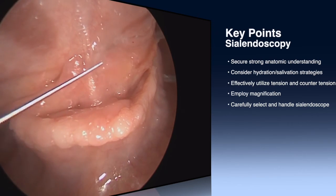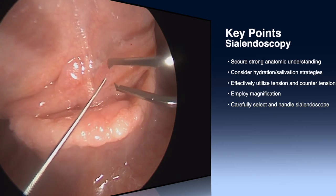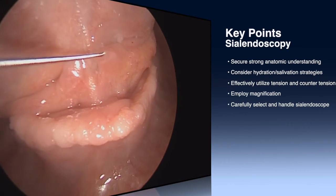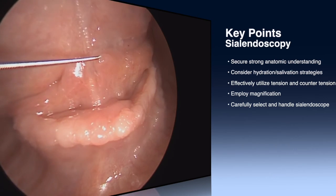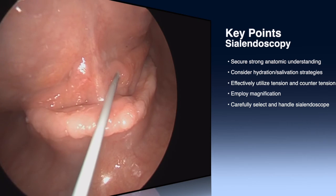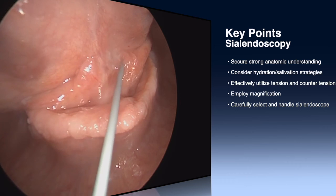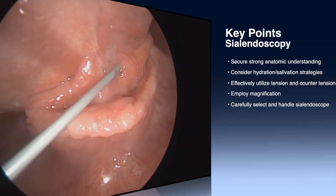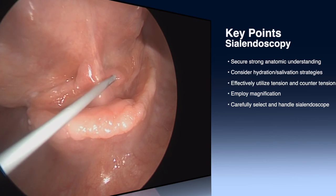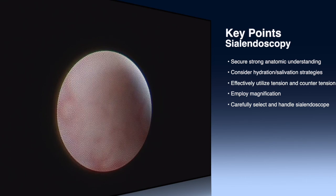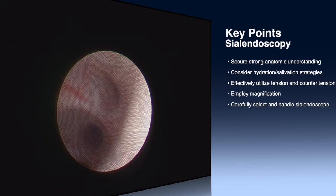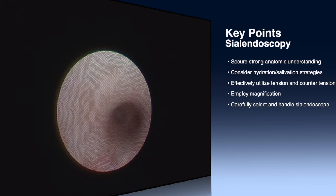In the case of the submandibular gland, the countertension can be provided with a curved tooth forceps or with countertension in the floor of mouth with the non-dominant hand. Magnification in the form of loops, exoscopes, or a microscope is essential for successful cannulation and dilation of the very small duct papilla. In general, I'd like to use a slightly larger sialendoscope — the 1.1 and 1.3 mm sialendoscopes are a good workhorse for diagnostic sialendoscopy, with the 1.6 mm sialendoscope particularly helpful for interventional sialendoscopy. The sialendoscopy equipment is extremely fragile and should be handled with great care in order to reduce the risk of fracture of your lenses, which is a costly repair. This concludes the video on diagnostic sialendoscopy. Thank you for watching.